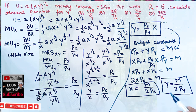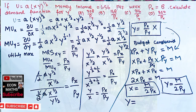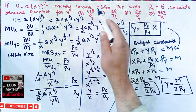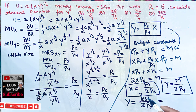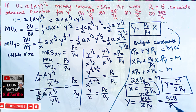Since we need the demand function for Y, we use Y = M / (2·Py). Our money income M is 656, so Y = 656 / (2·Py) = 328 / Py. This means the correct answer is option A: 328 divided by the price of Y.